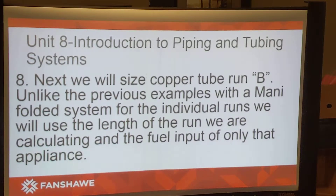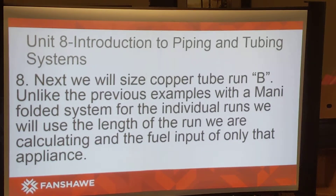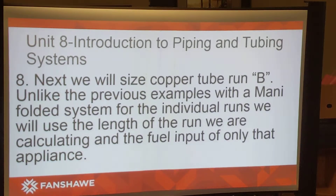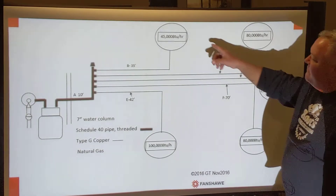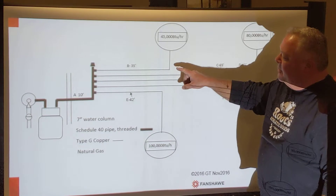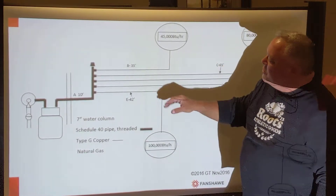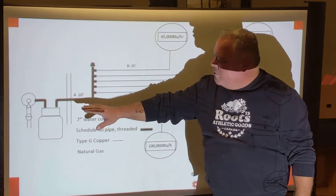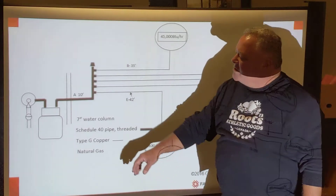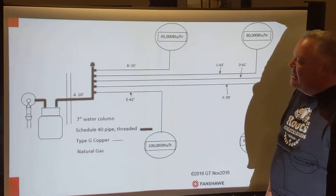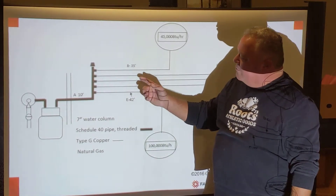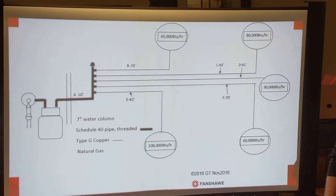Next we're going to size the copper tubing runs, starting on tube B. On manifolded systems, for individual runs we use the length of the run individually and only the input of the appliance on that particular run. For tube B, we have a 45,000 BTU per hour appliance. Tube B has a tubing length of 35 feet, and we always add the 10 feet of schedule 40 pipe since we measure from the outlet of the gas meter, giving us a total measured run of 45 feet.